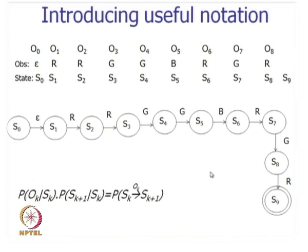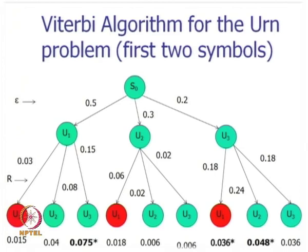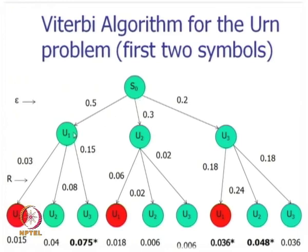Now that this probabilistic finite state machine is in place, we can use a tree diagram representing the famous Viterbi algorithm for the urn problem. The tree is shown for the first two symbols and grows further as more symbols come in. The first symbol is epsilon, second is R, third is another R, fourth is G, and so on. At each level from the initial state, the three possibilities are u1, u2, and u3, similarly expanding from each node.